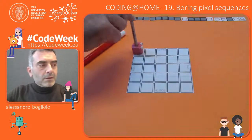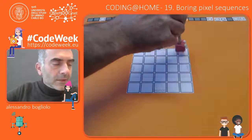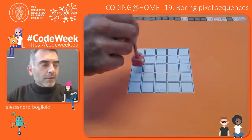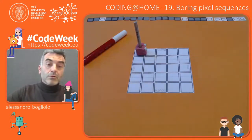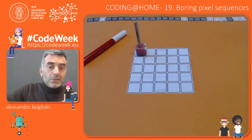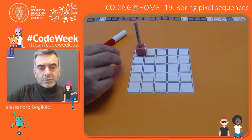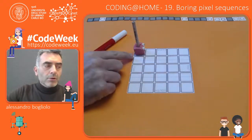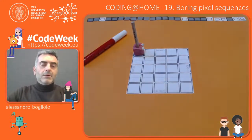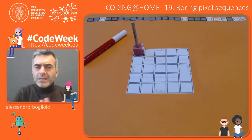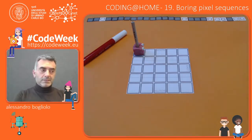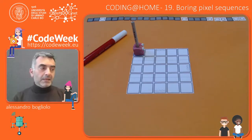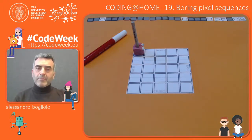Since our RobyPrinter moves automatically across the board row by row, starting from this corner up here, we don't need to provide moving instructions to Roby. We just need to tell Roby whether to skip or to color a box when it is on that box. So we need only two instructions: skip, meaning that the box has not to be colored, or color, meaning that it has to color entirely the box where it is.